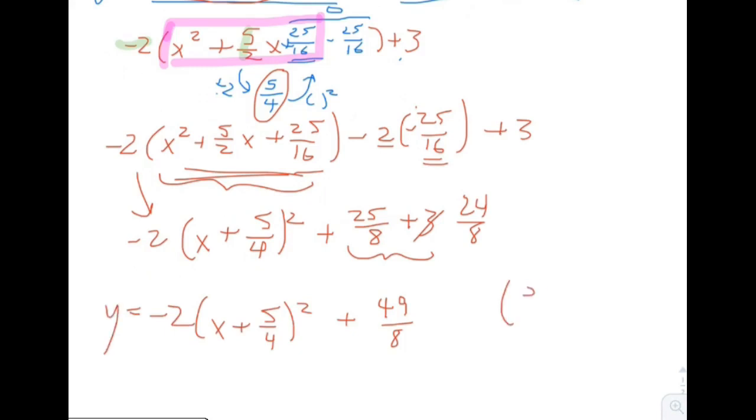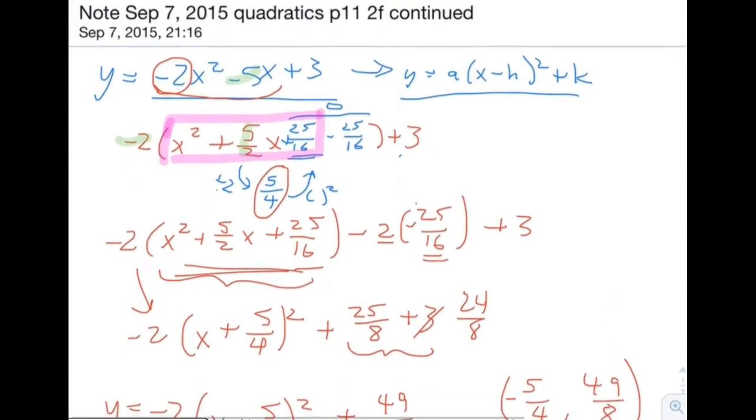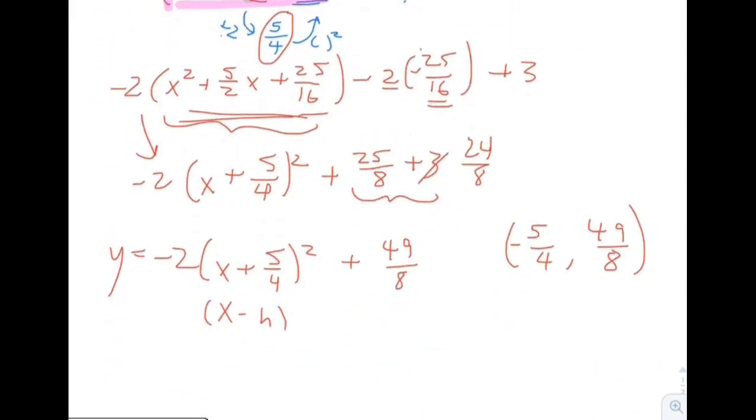You can see that the vertex is at negative 5 fourths comma 49 eighths, which is the same answer we got before. Be careful, because remember, this is x minus h. So since there's no negative here, that means that the h term is actually negative 5 fourths, because it's a minus negative. So h is negative 5 fourths. k is plus k, so it's just positive 49 eighths.